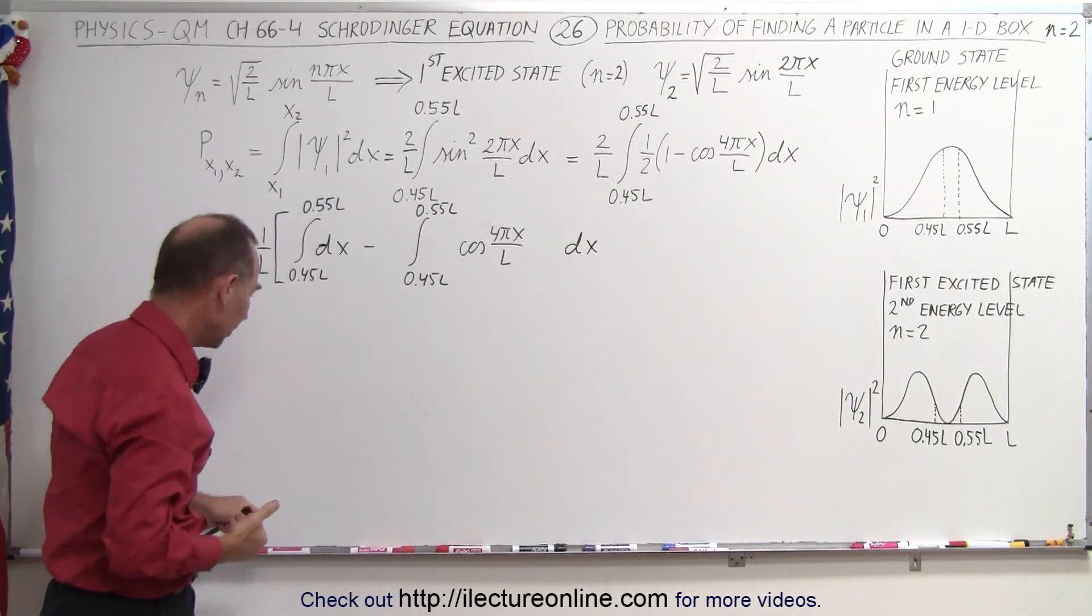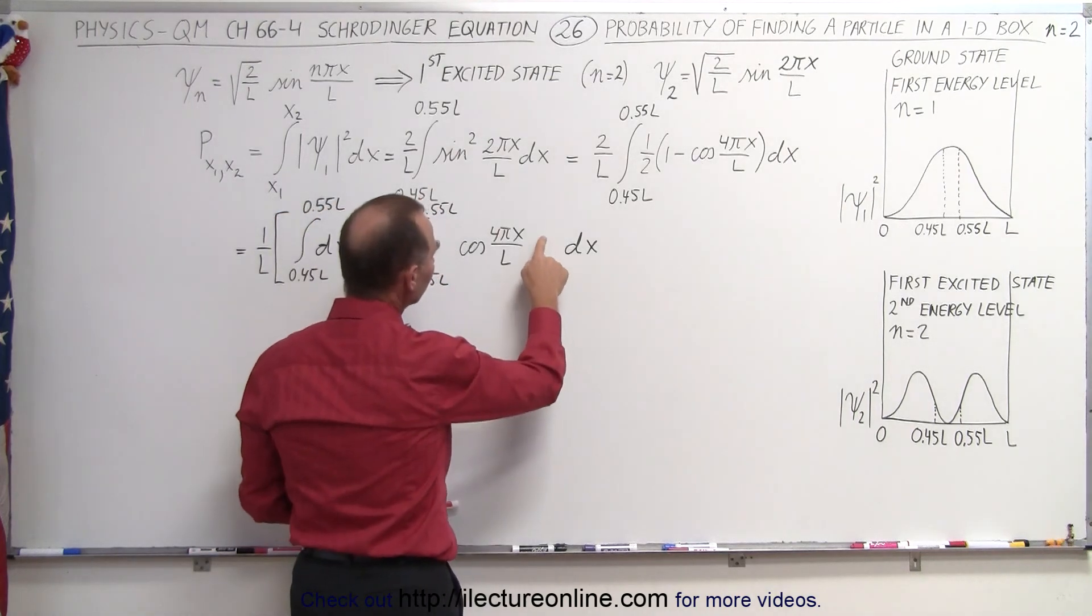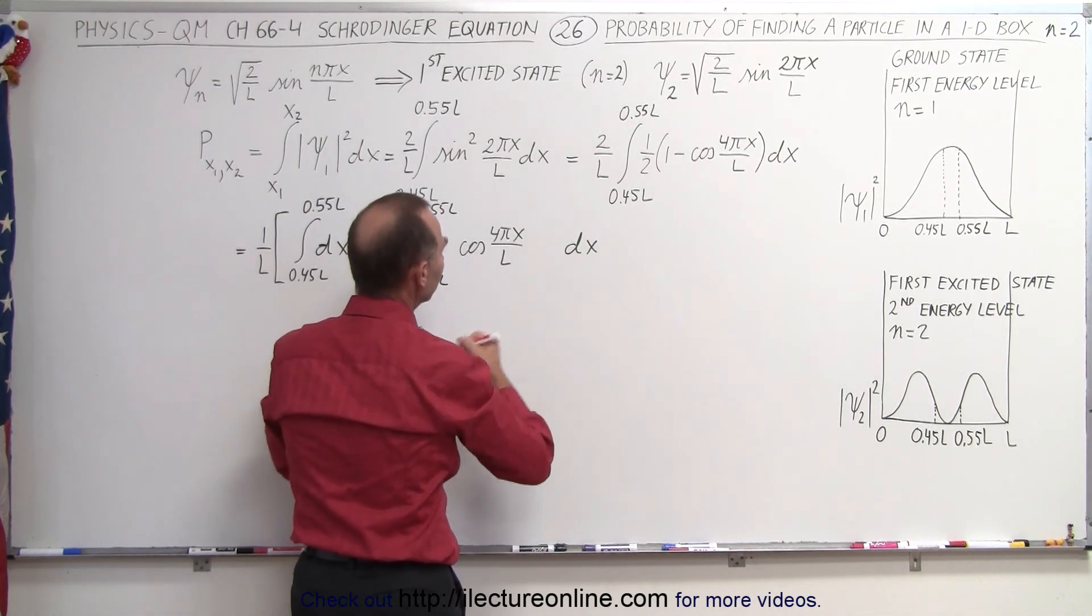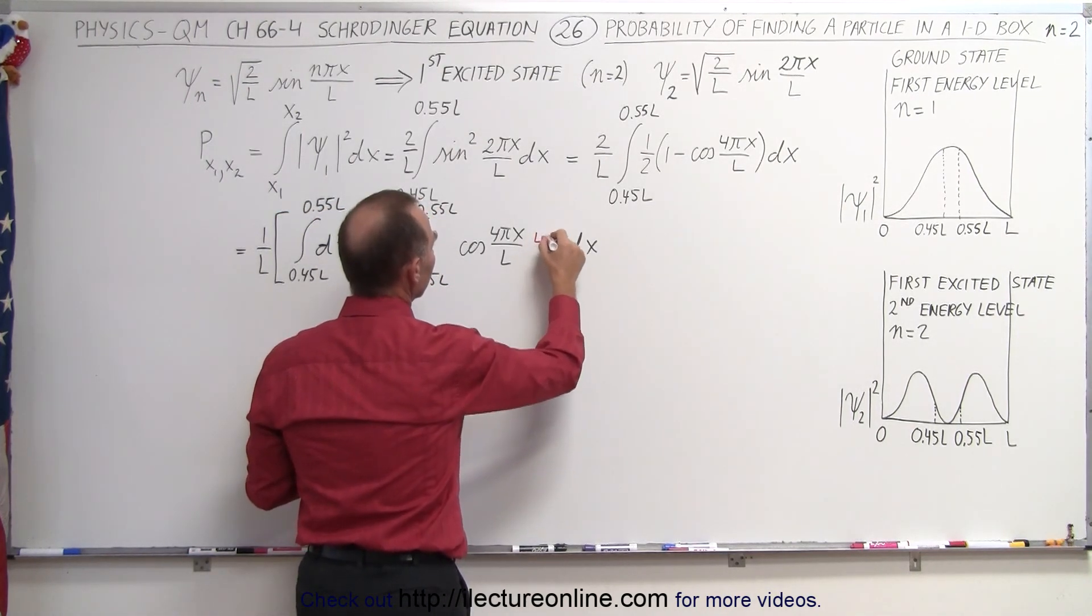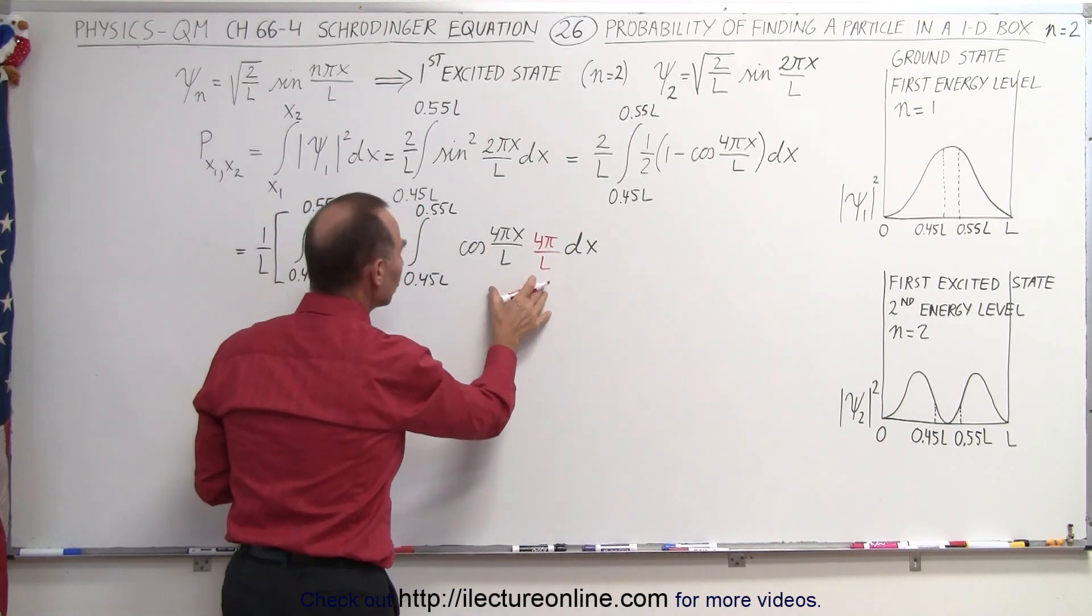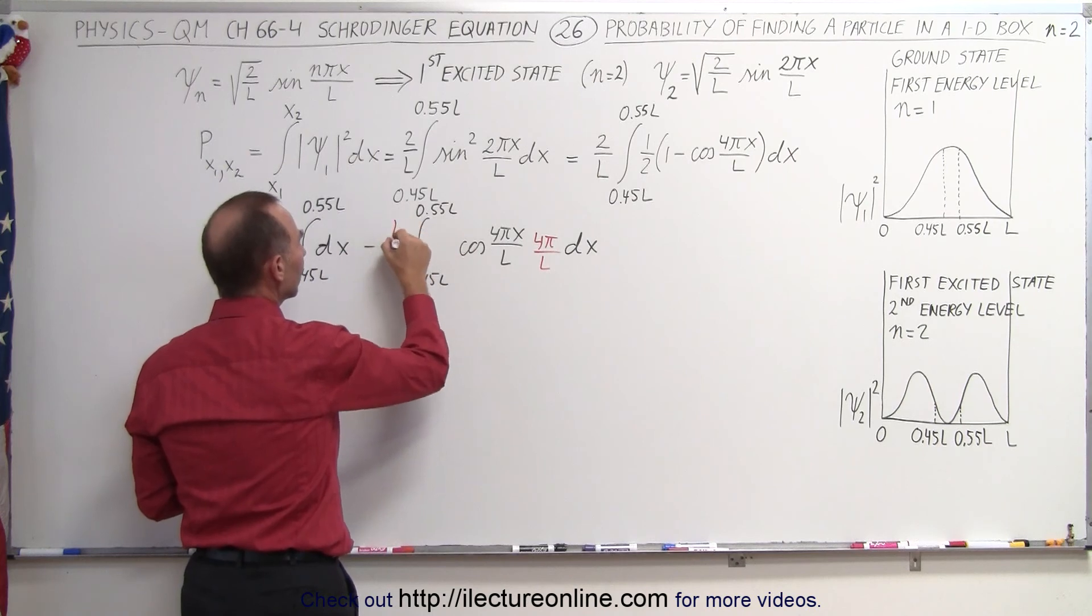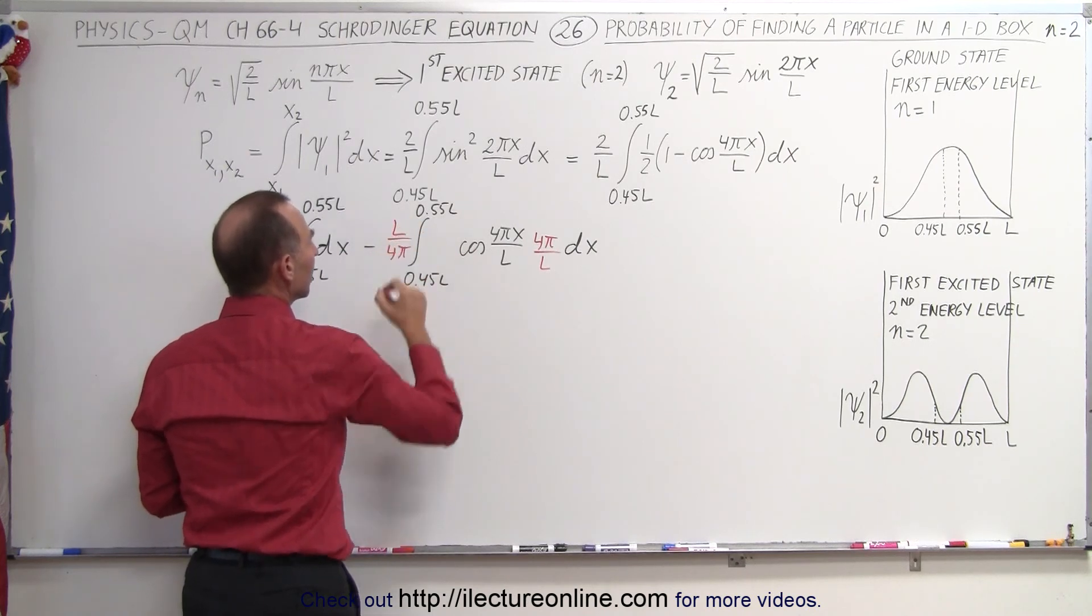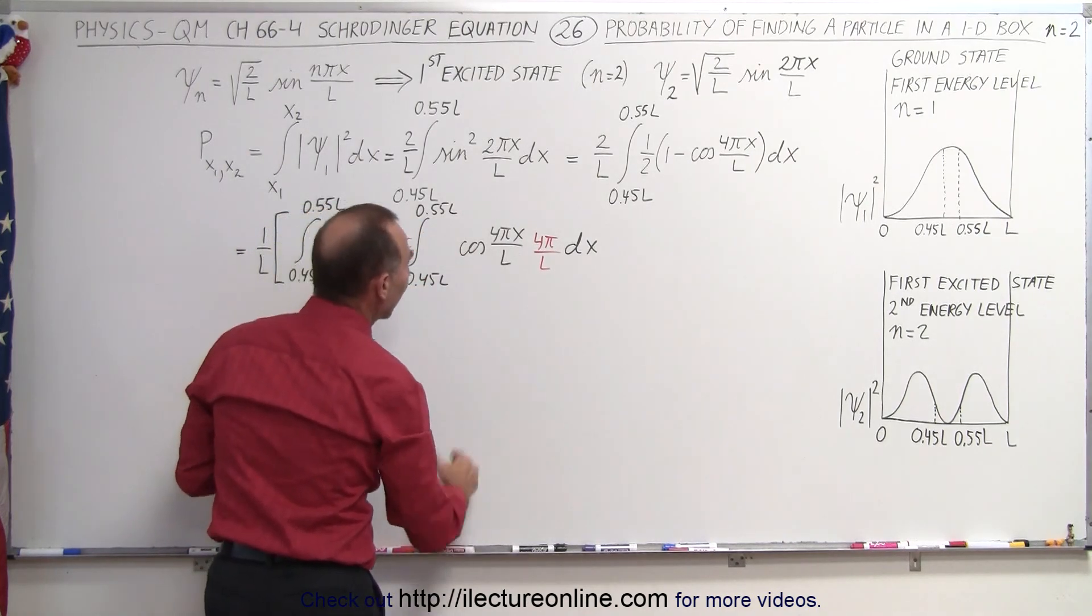Well we need the proper differential. We're going to need a 4π over L over here and so we need to multiply times L over 4π so that we didn't change anything. We can put that in front so L divided by 4π like this and now we're ready to integrate.